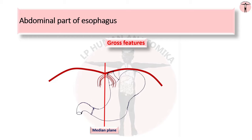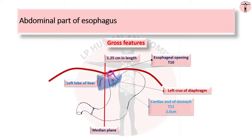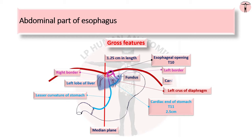The abdominal part of esophagus is just 1.25 cm in length. It enters the abdomen through the esophageal opening of the diaphragm situated at the level of the 10th thoracic vertebra, slightly to the left of the median plane. It runs downward and to the left in front of the left crus of the diaphragm and behind the left lobe of liver, ending at the cardiac end of the stomach at an acute angle at the level of the 11th thoracic vertebra, about 2.5 cm to the left of the median plane. Thus, it extends from T10 to T11. Its right border becomes continuous with the lesser curvature of the stomach, whereas its left border is separated from the fundus by a notch called the cardiac notch.